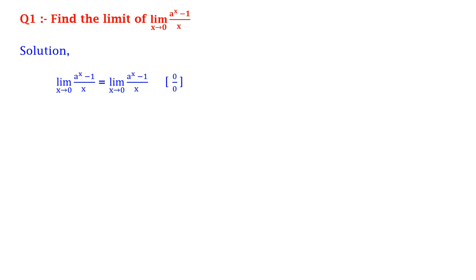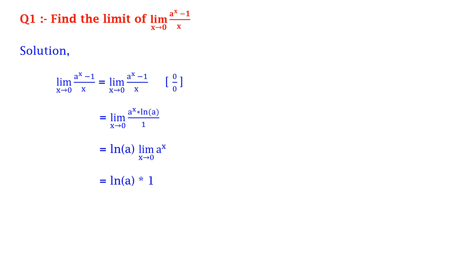So we apply L'Hôpital's rule, which gives us limit x tends to 0 of the differentiation of the numerator, a^x times ln a, upon the differentiation of the denominator, which is 1. This gives us ln a times limit x tends to 0 of a^x, which equals ln a times 1, which equals ln a.